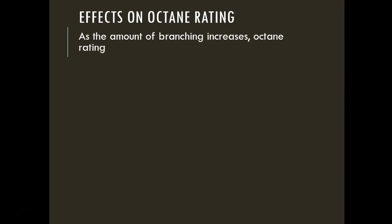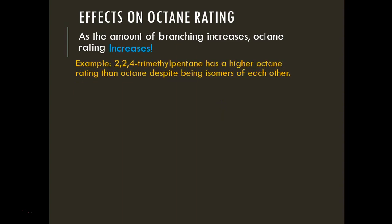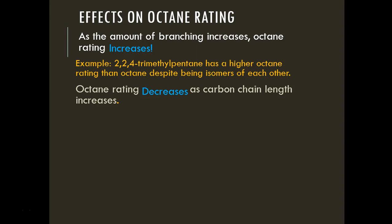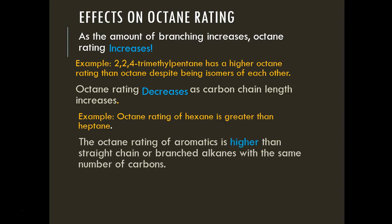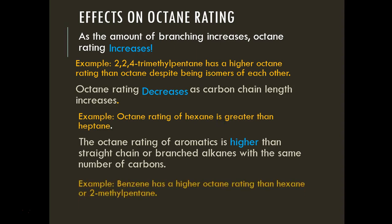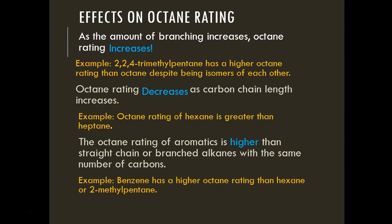As the amount of branching increases, octane rating also increases—for example, 2,2,4-trimethylpentane has a higher octane rating than octane because of increased branching, even though it is an isomer. Octane rating decreases as carbon chain length increases, so hexane has a higher octane rating than heptane. Aromatics like benzene have very high octane ratings—greater than either straight-chain or branched alkanes—which is why benzene is added to gasoline.